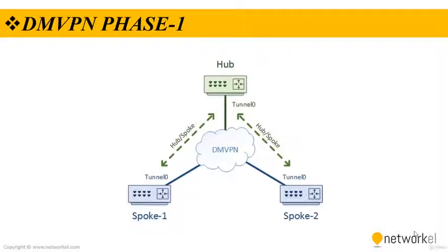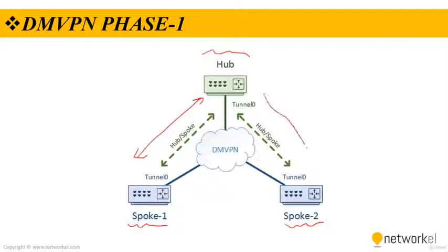DMVPN Phase 1 was the first DMVPN implementation and provides zero-touch deployment for VPN sites. VPN tunnels are created only between spoke and hub sites — traffic between spokes must traverse the hub to reach the other spoke. This is a legacy implementation of DMVPN. In Phase 1, if spoke one wants to communicate with spoke two, the traffic must go to the hub and then be forwarded to spoke two.